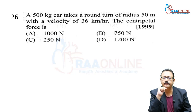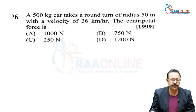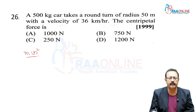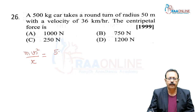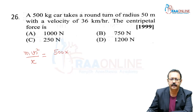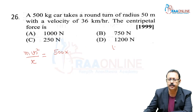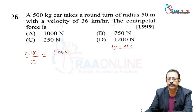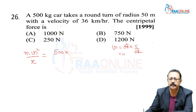Centripetal force = mv²/r. M = 500 kg. First convert V: 36 km/h × (5/18) = 10 m/s. V² = 100. R = 50 m.